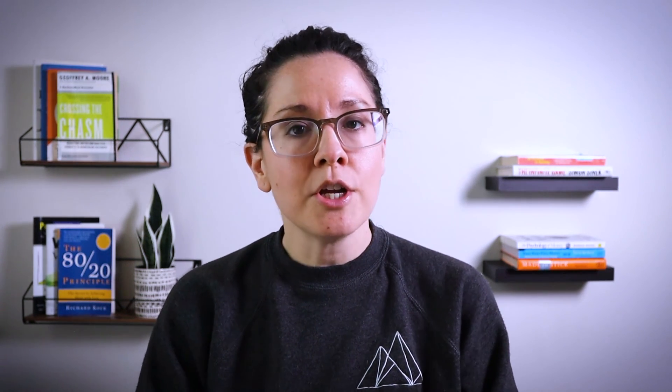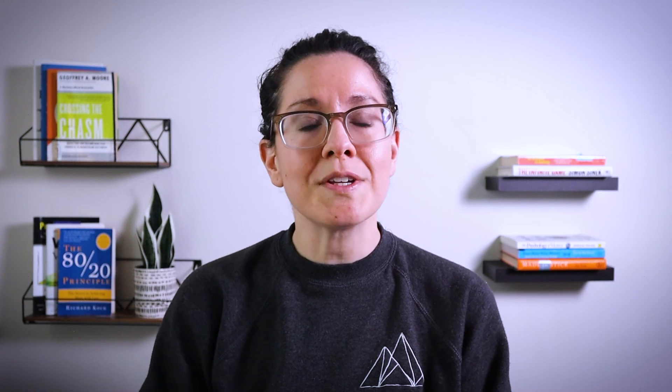Finally, when you preview your pages in your development environment, Bubble is going to automatically add a URL parameter to enable a debugger. This is a troubleshooting tool to help you inspect your workflows and your visual designs. You can disable it by just removing the parameter altogether or setting the value of that parameter to false.